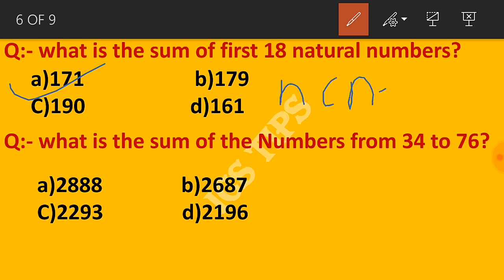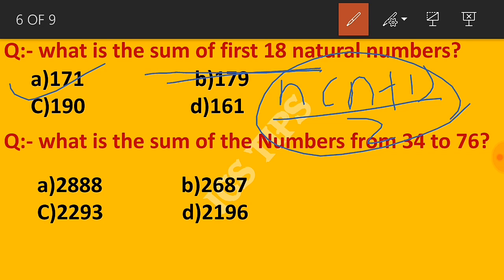18 times 19 divided by 2 equals 171. The answer is 171.